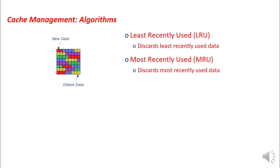The cache management algorithm uses two techniques: Least Recently Used (LRU) and Most Recently Used (MRU). In LRU, the cache discards the least recently used data — data that is oldest and not recently accessed. In MRU, the most recently used data is discarded, assuming it will not be needed again immediately. New data comes in and the oldest or most recently used data is removed, freeing cache space.